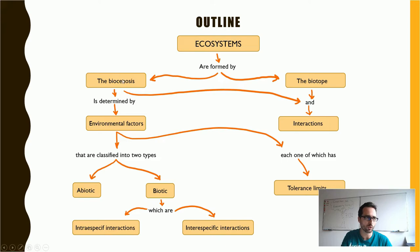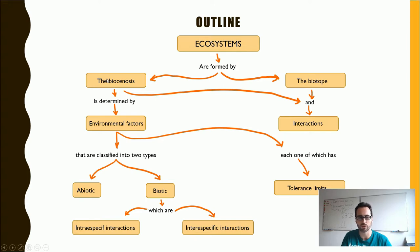Both of them have interactions, because sometimes a living being can interact with its environment, and sometimes the environment can affect that living being. The animals or living beings that compose the biocenosis can also interact with each other. Another thing to take into account is that the biocenosis is determined by the environmental factors, which are closely related to the biotope — depending on the environment, you can find different kinds of living beings.